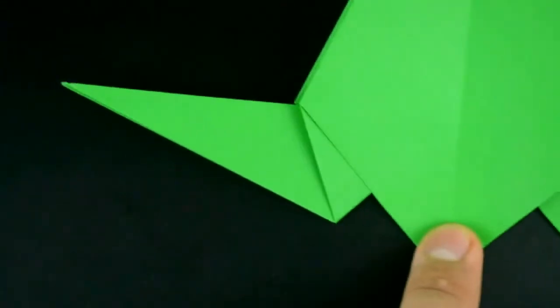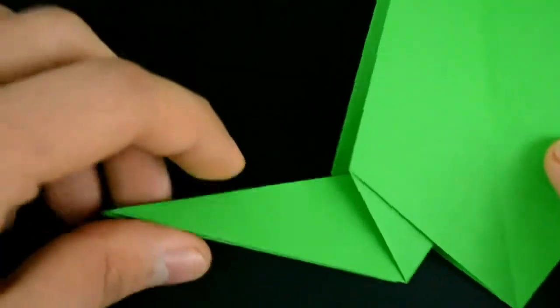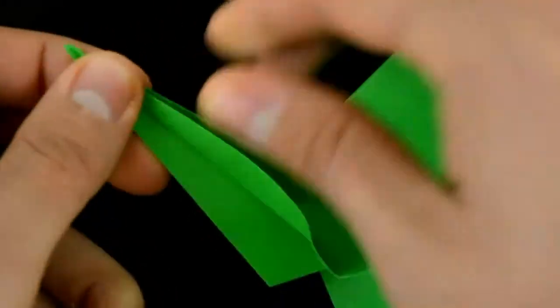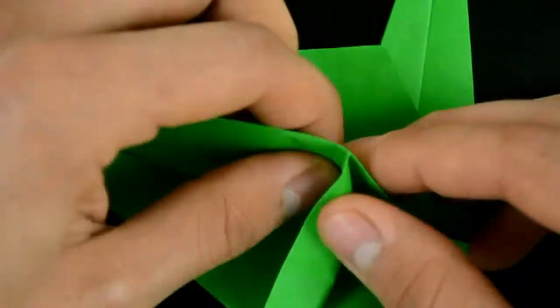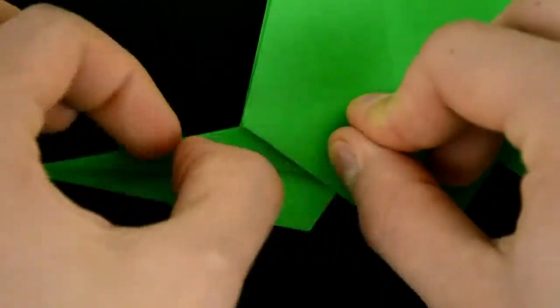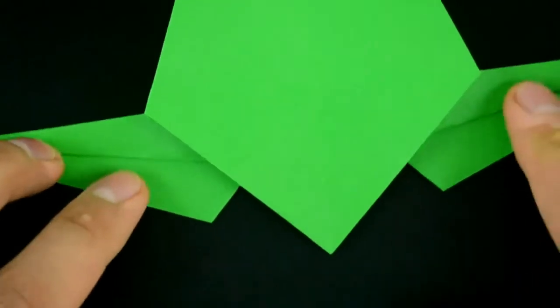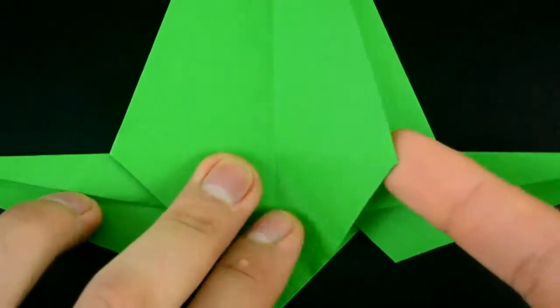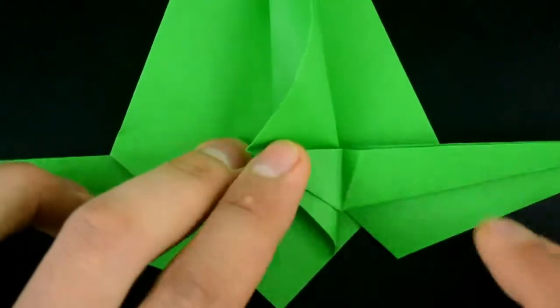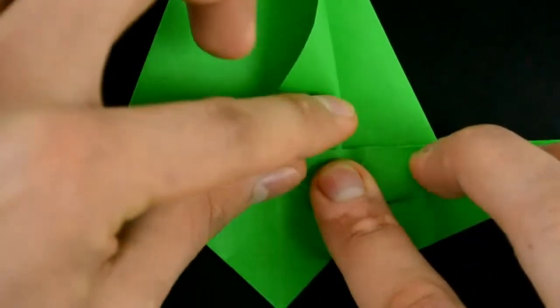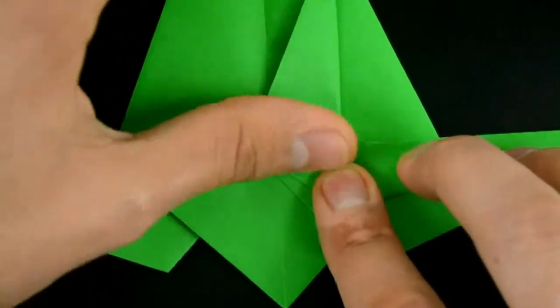The right sides, ok. Now repeat the same on the left. Now we need to fold this corner on the right side to the left, like this, in line with the middle.